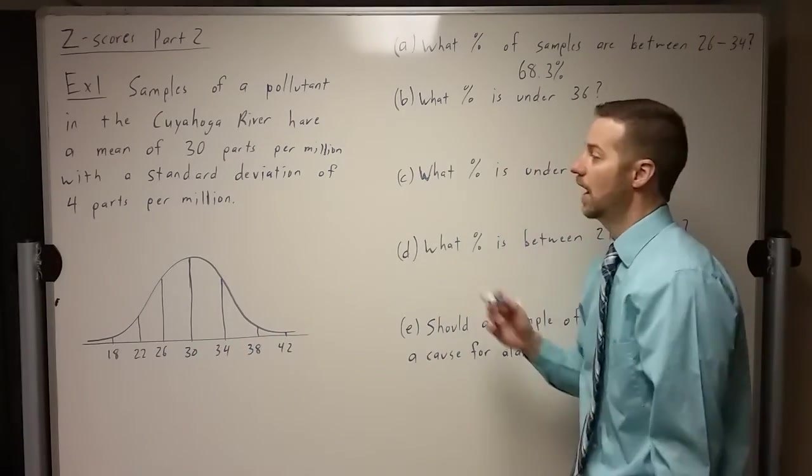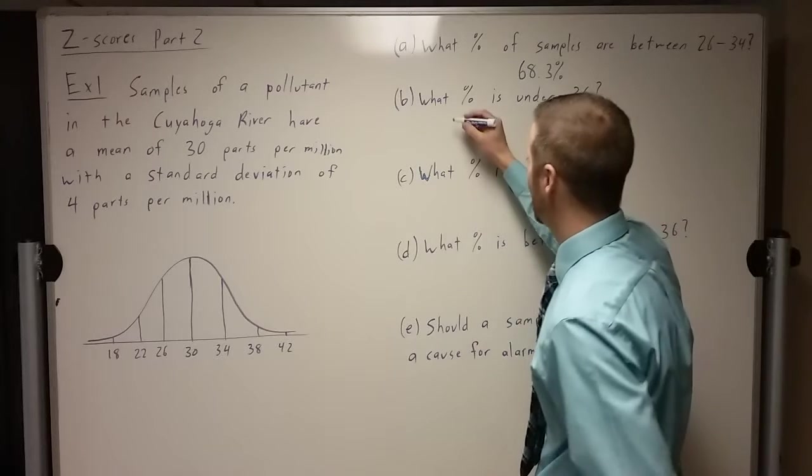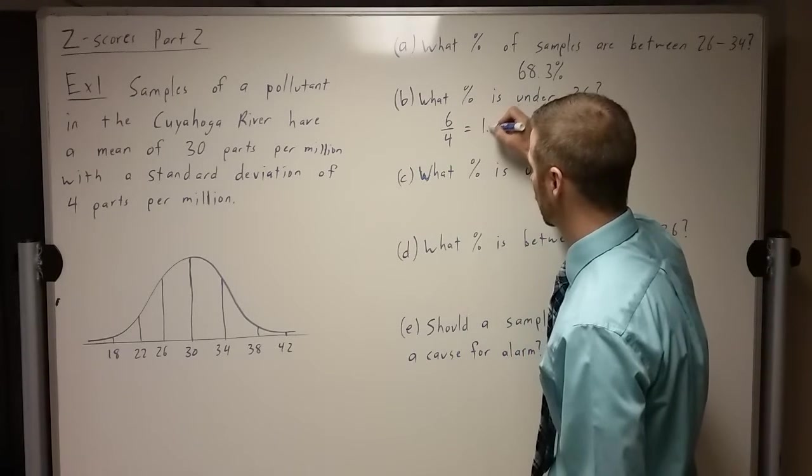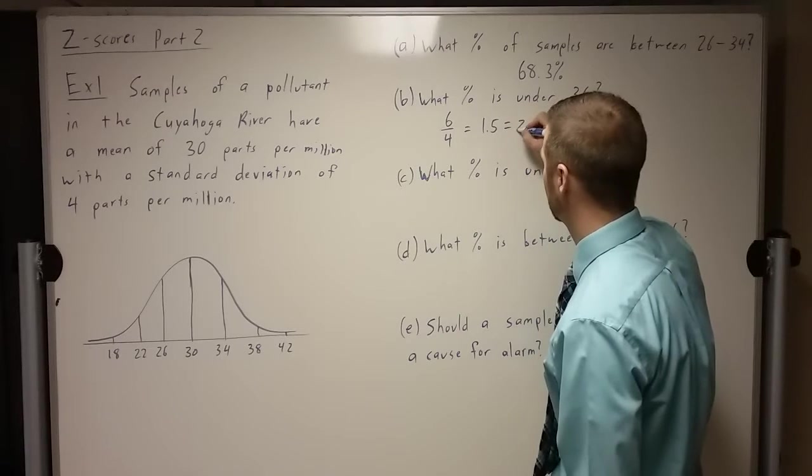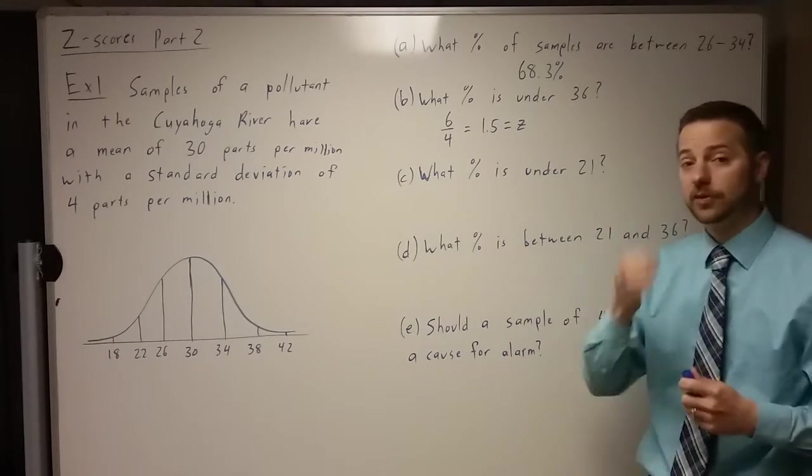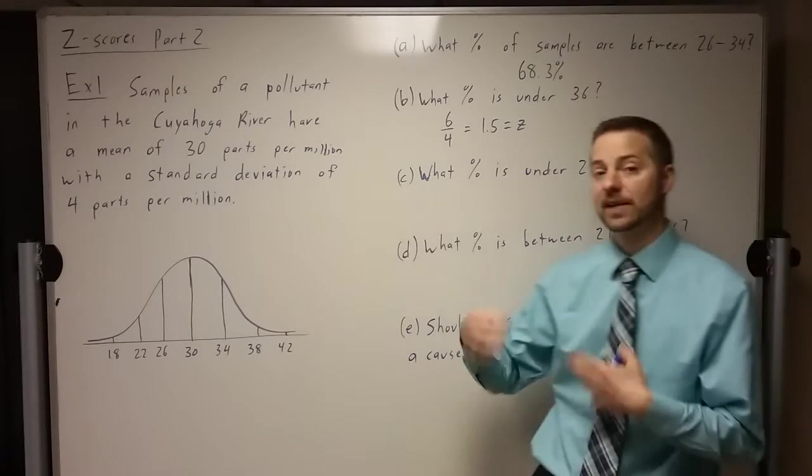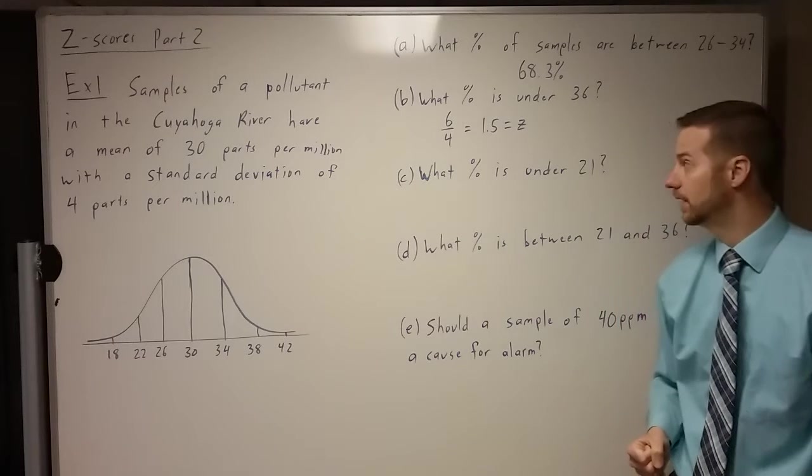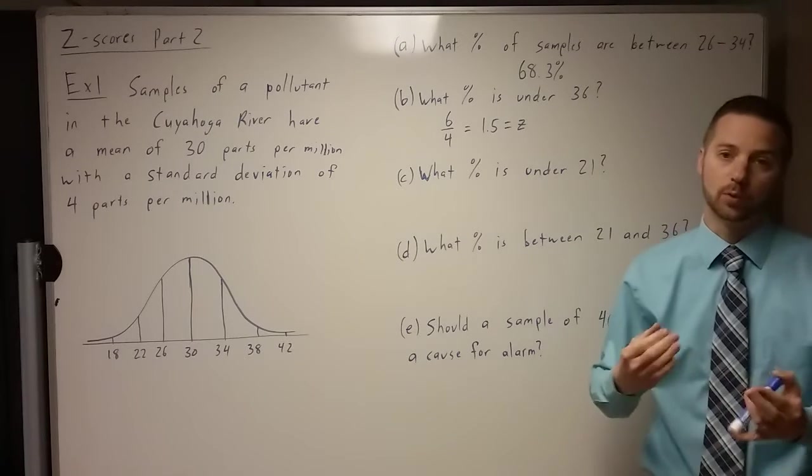If we go six units away from the mean, because that was 30, we're at 36, and our standard deviation is four, then we're going six away from there, standard deviations is four, and so we're going one and a half above the mean. Remember, if we go above the mean, it's a positive z-score. If we go below the mean, that's a negative z-score. So since we went above the mean, one and a half standard deviations, the z-score here is 1.5.